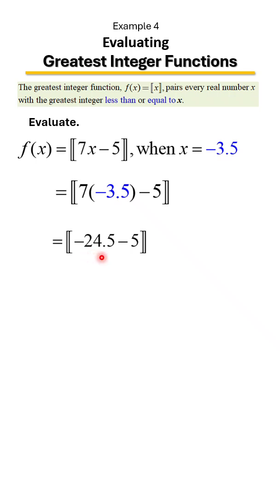The signs are the same, keep the sign and add the numbers. That's going to give us negative 29.5. And now that we have it to where it's one number, we need to find out what is the greatest integer output here.